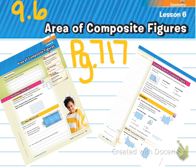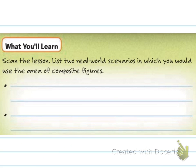We're looking at 9.6 Area of Composite Figures, which starts on page 717. The first part is that they want you to scan the lesson and list two real-world scenarios in which you would use the area of composite figures. Pause the video now and come up with two real-world scenarios.